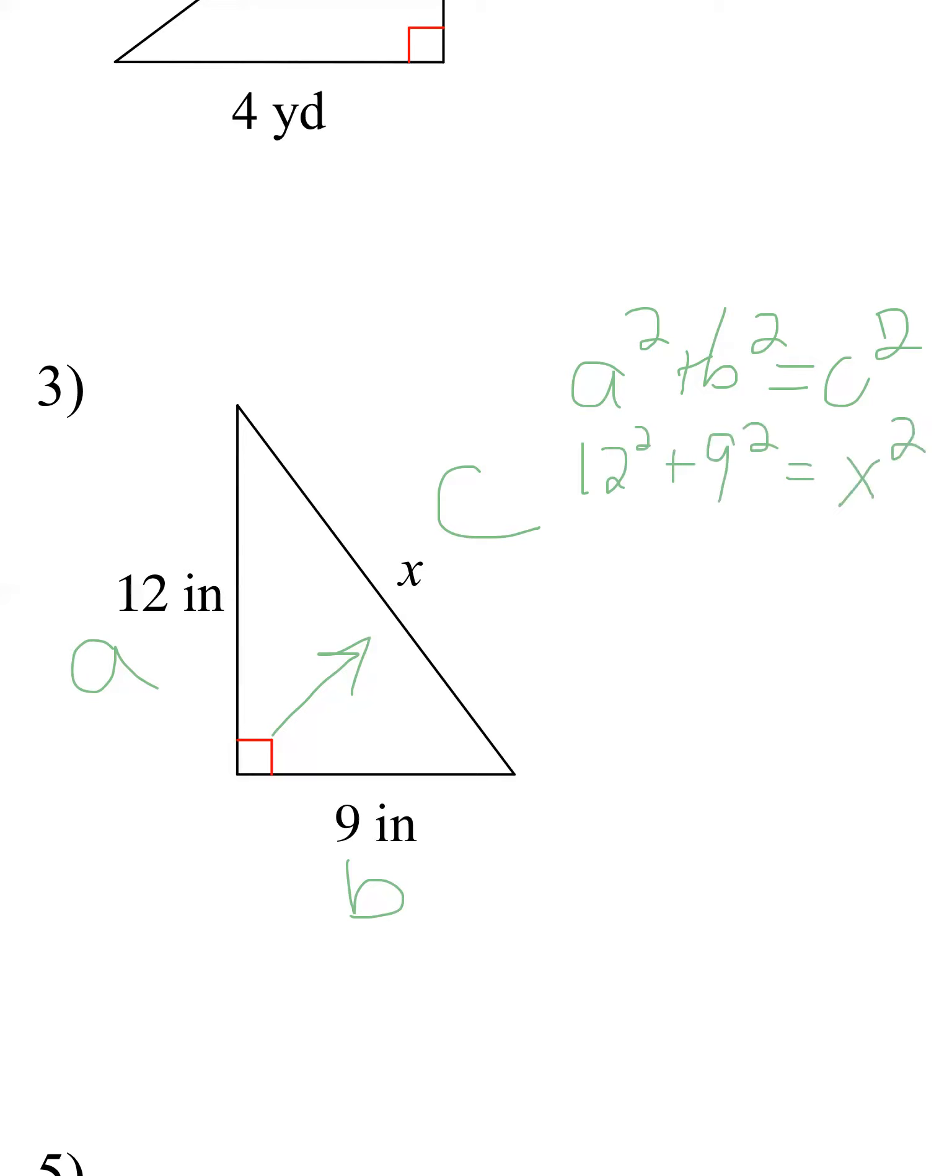12² is 144, 9² is 81. 144 and 81 get me 225. Just like usual, sneak in square root both sides. I get x equals the square root of 225, which just so happens to be 15.